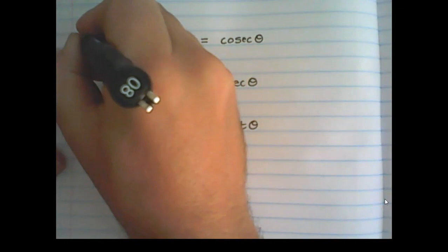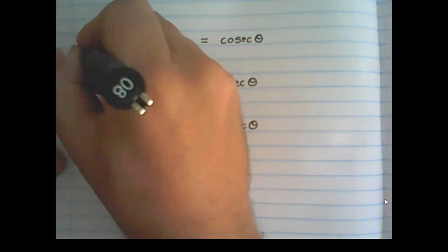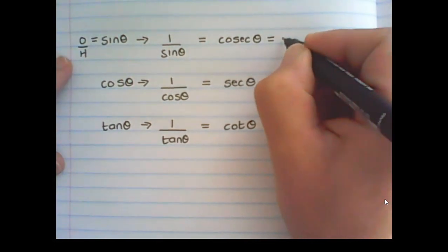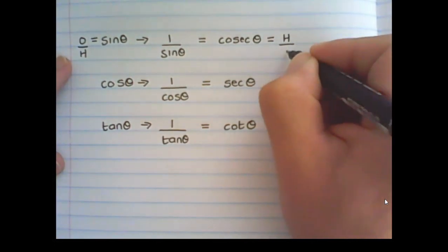So where sine was the opposite over the hypotenuse in a triangle, cosec theta would be the hypotenuse over the opposite.